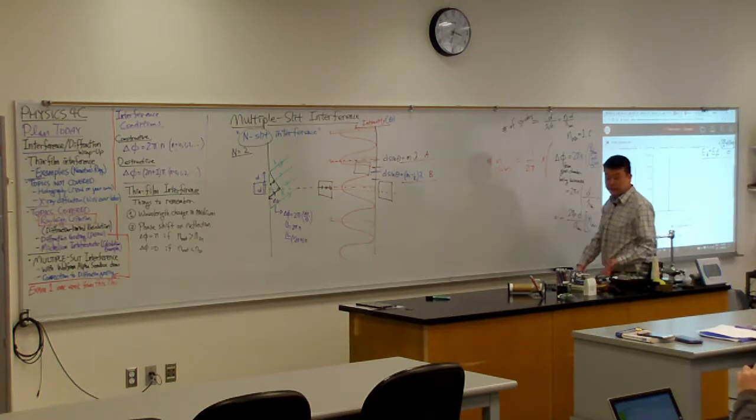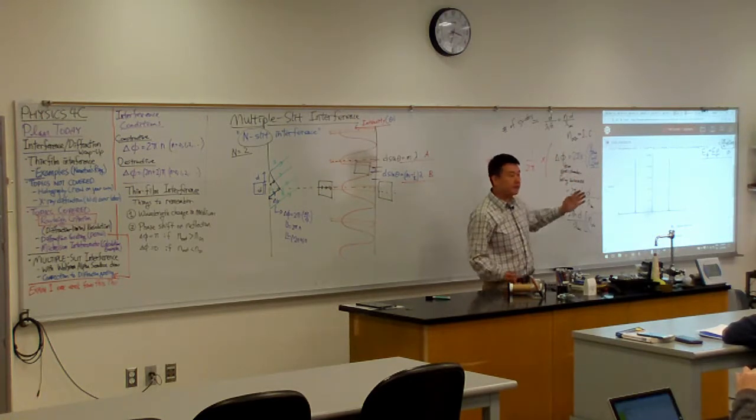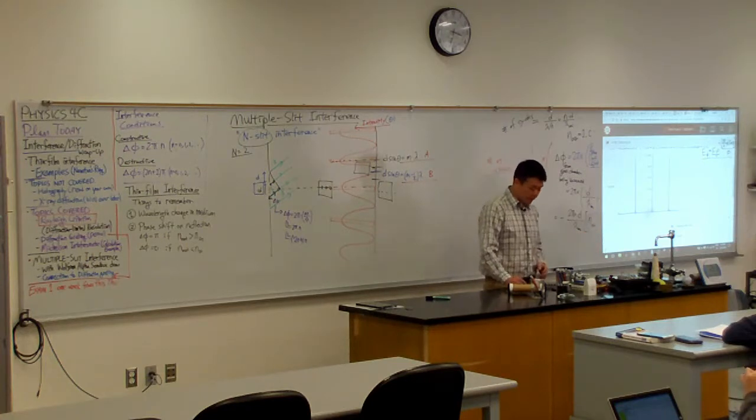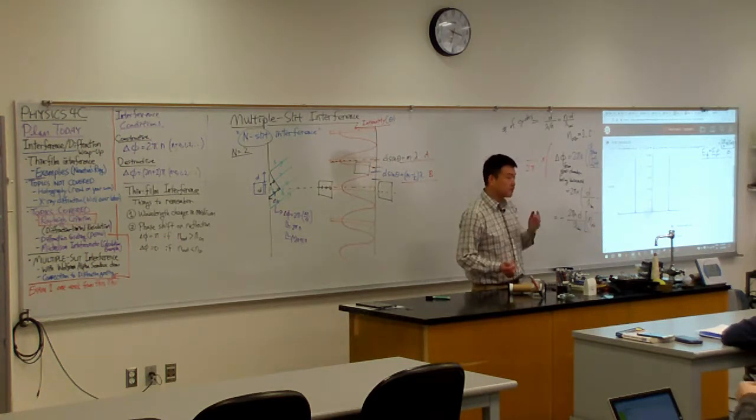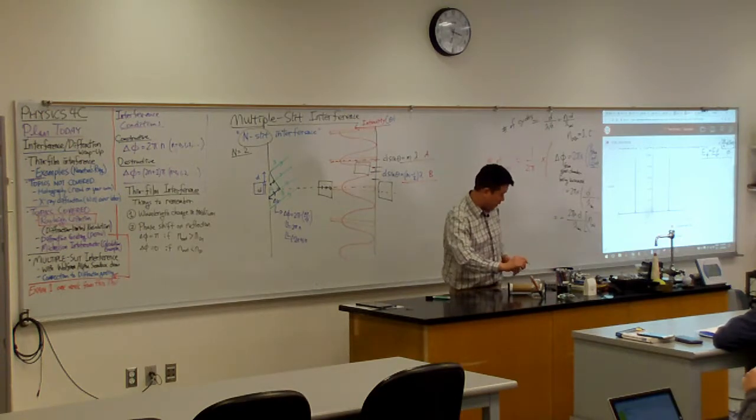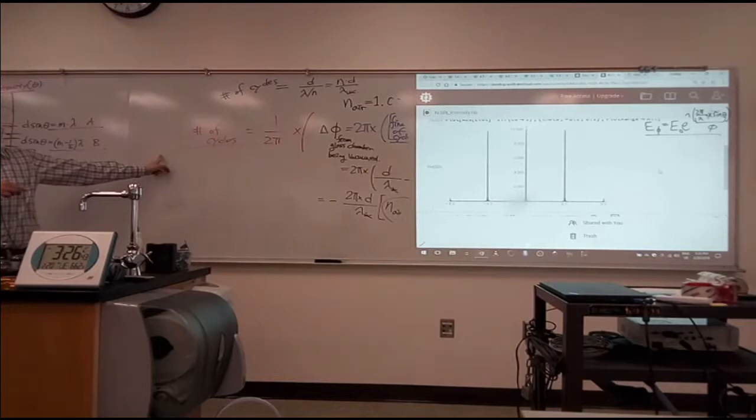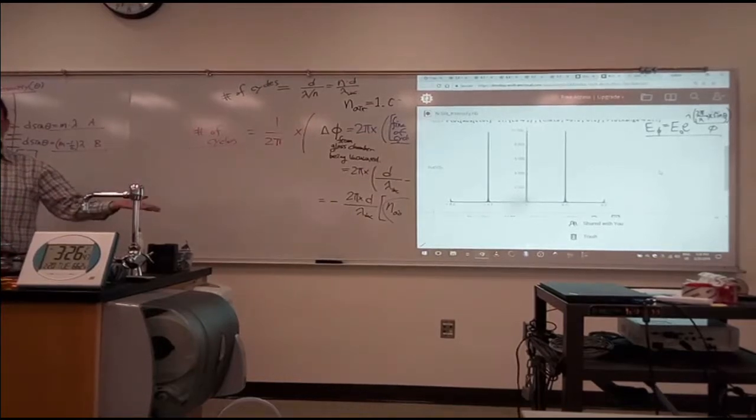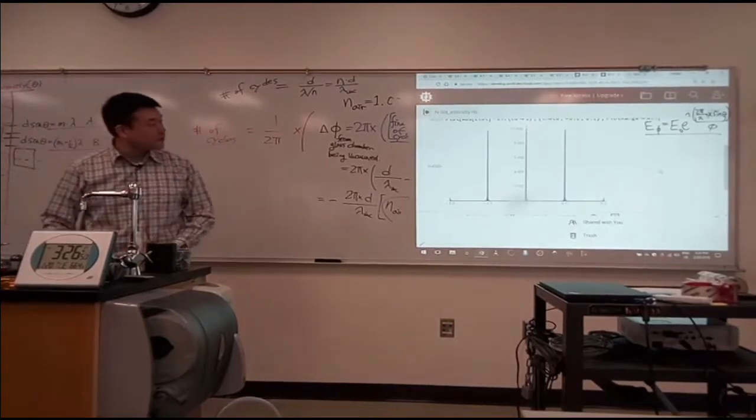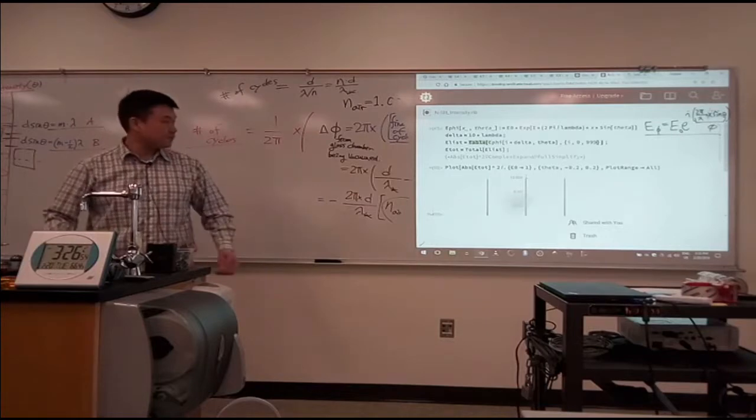What that diffraction grating is, is this. It's that N slit with N taken to a very large number, like a thousand. So for that diffraction grating you are holding, I think it's thousand lines per millimeter. So if you have this laser beam of one millimeter in width, it's going through a thousand of those slits. So it's as if I took this and made this a thousand instead of a hundred.